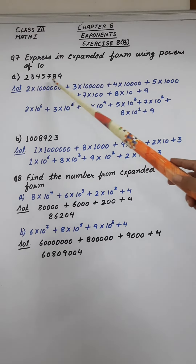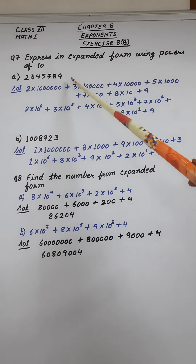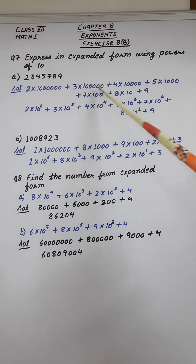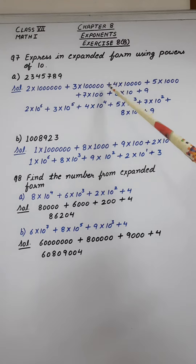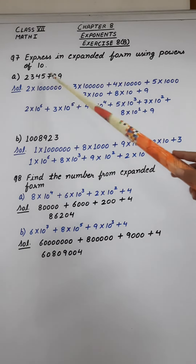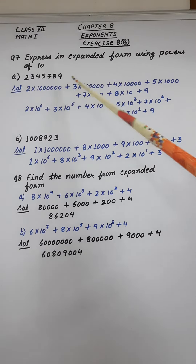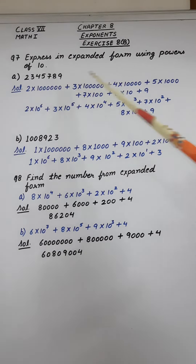After 3, how many digits are there? 5. So it will be 1 and then 5 zeros, plus 4 multiply by 1, 2, 3, 4 — 4 zeros will be there. So 4 multiply by 10,000 plus 5 multiply by 1000 plus 7 multiply by 100 plus 8 multiply by 10 plus 9.